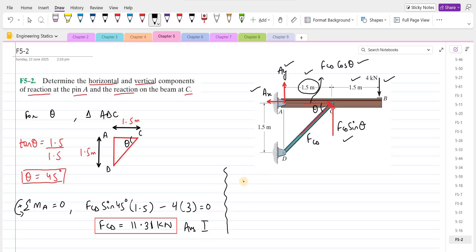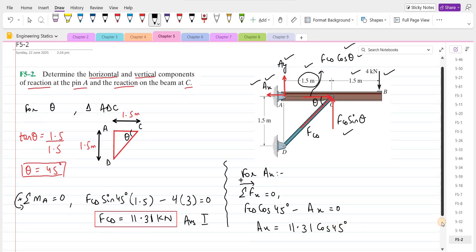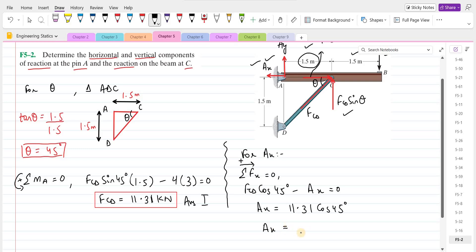Now we have to do the working for the support reaction Ax. We can do summation of forces in x direction equals to 0. I am considering right hand side as positive. We have FCD cos theta, and theta is 45 degrees, minus Ax equals to 0. Ax is equals to FCD cos 45, and FCD is 11.31 kilonewtons. So 11.31 into cos 45. The support reaction Ax comes out to be 8 kilonewtons. This is our second answer.